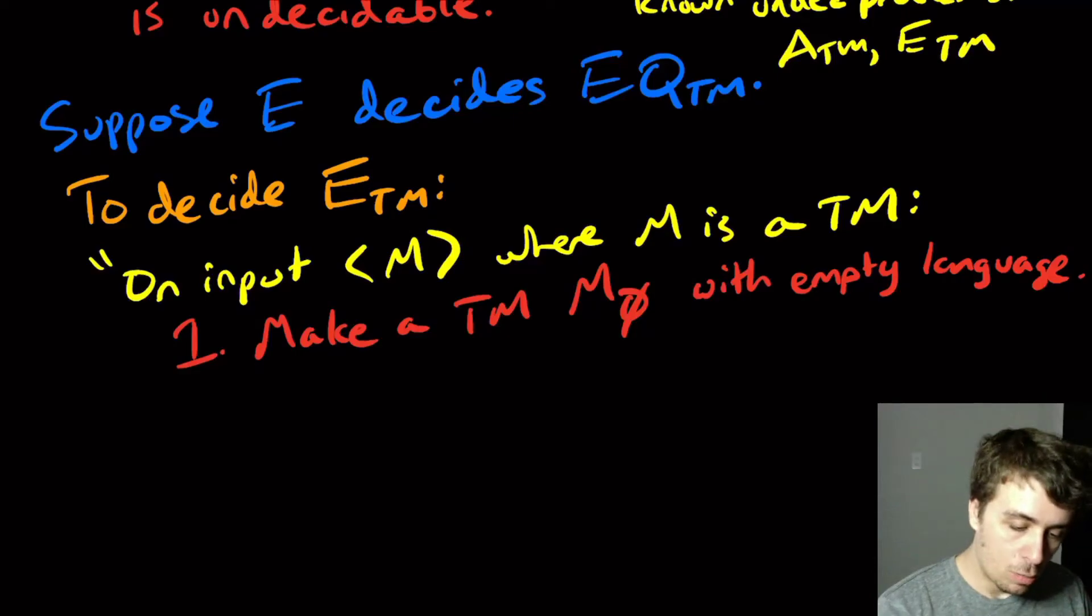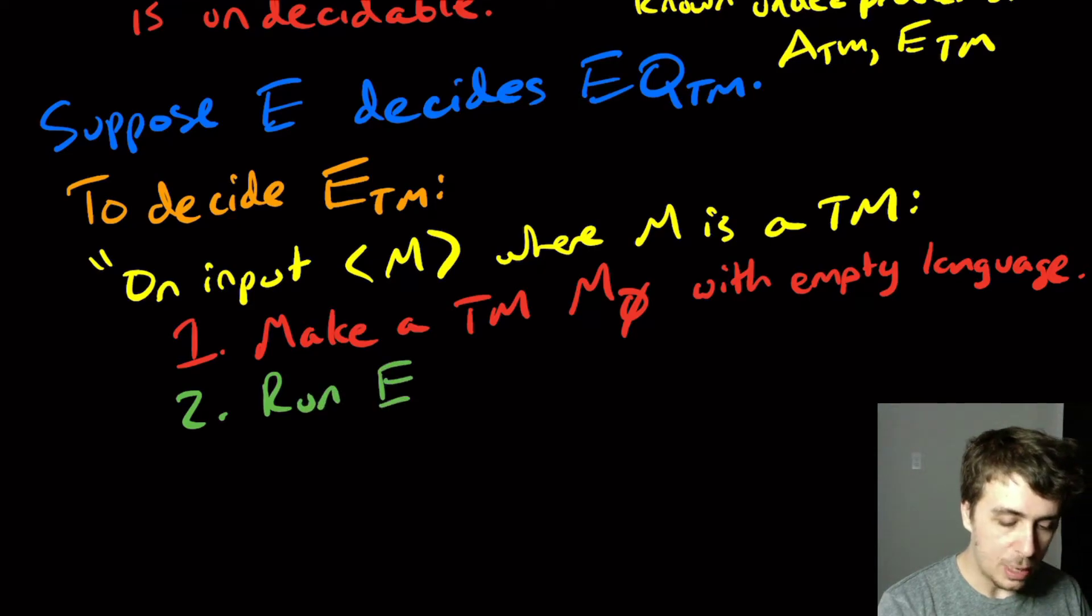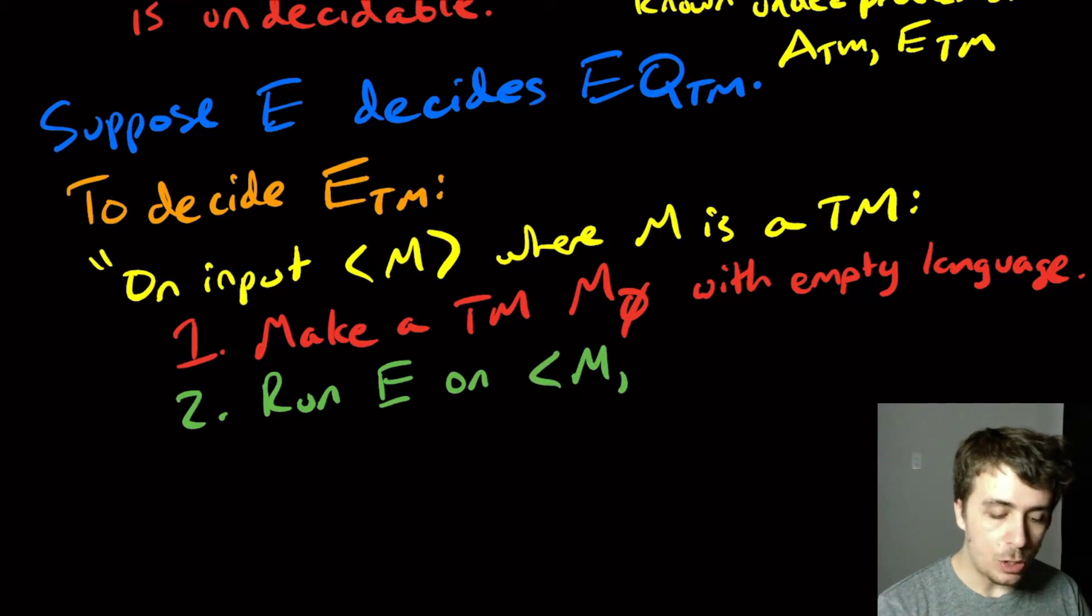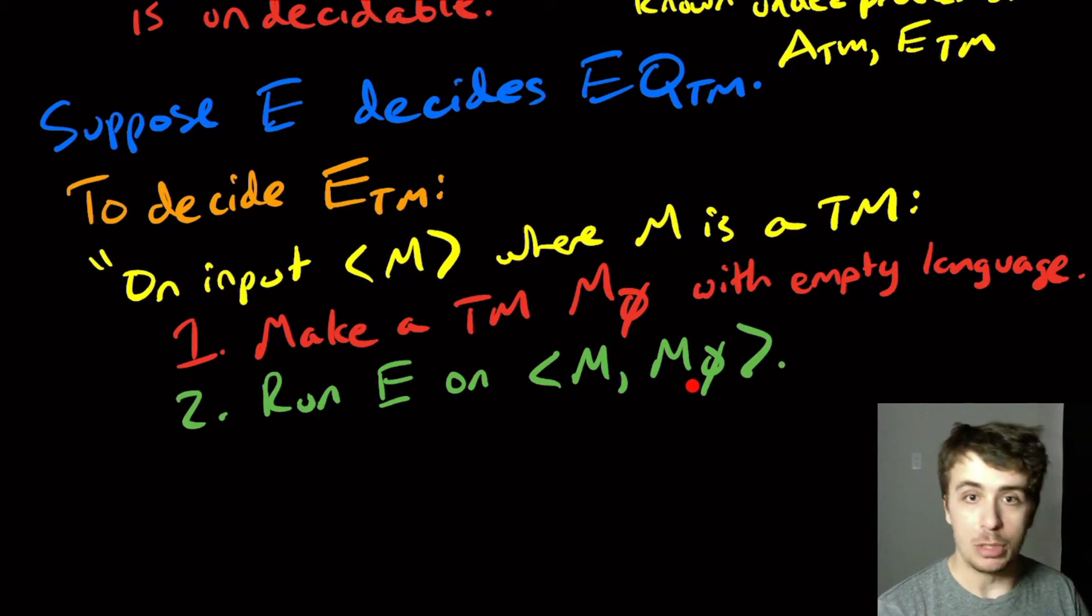So what we're going to do now as a second step is run that supposed equivalence decider. On input, I'm going to feed the original Turing machine that I'm given up here, along with the machine that we just made. So this machine, which definitely has empty language, and this one, which I'm trying to figure out about.